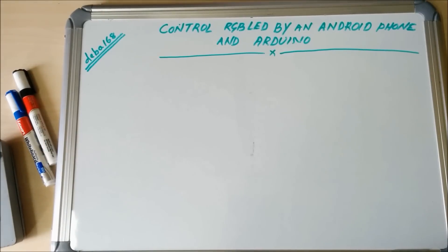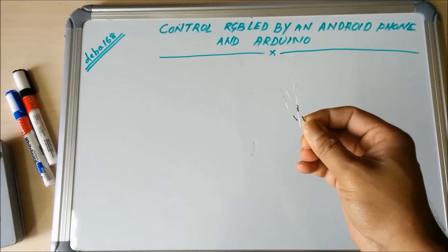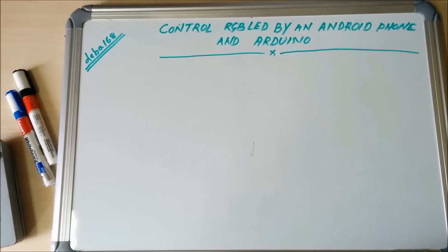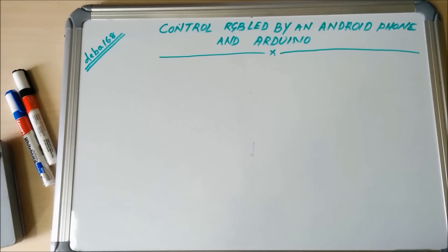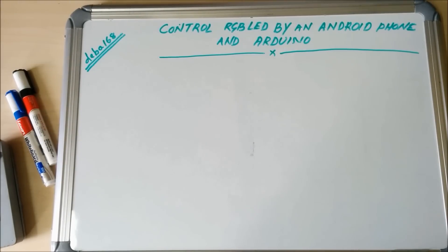We also need three 220 ohm resistors, few jumper wires, and a breadboard. Let's start the project. First I am going to show you the schematic for this project.